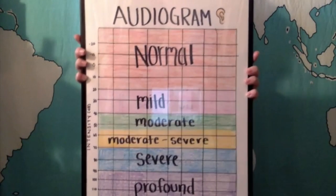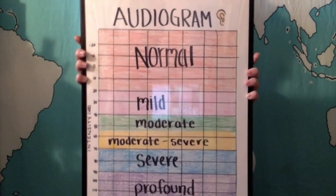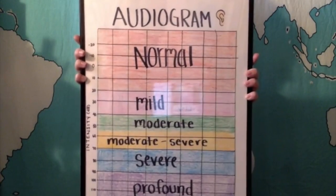As you can see here, the intensity or loudness is measured on the side and the frequency or pitch is measured on the bottom.